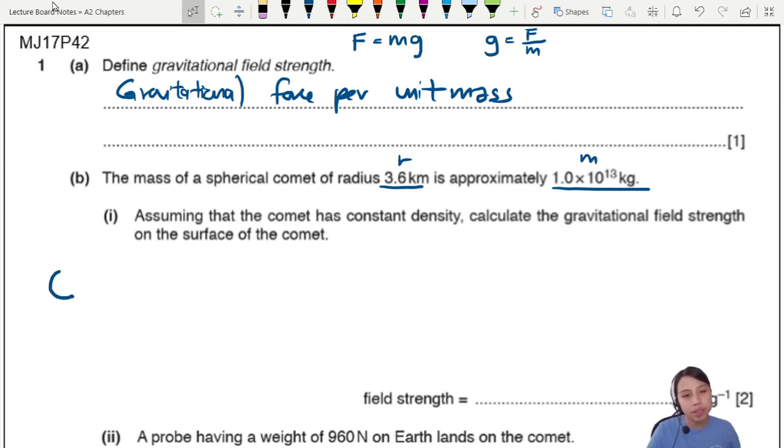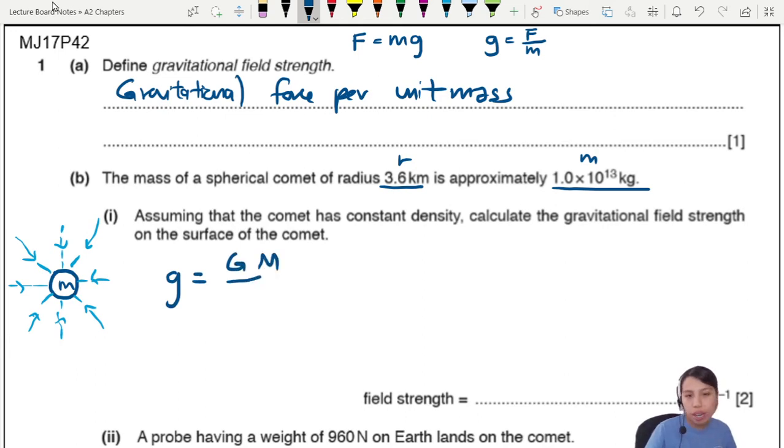Our comet looks like this, a perfect round shape with a field around it. It looks like a charge except this is a gravitational field. This is M and it's attractive, the field points towards the mass. If anybody comes near it will be attracted to this comet. The equation for field strength, small g, is GM over R squared. Where are we? On the surface of the comet.